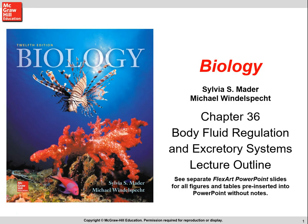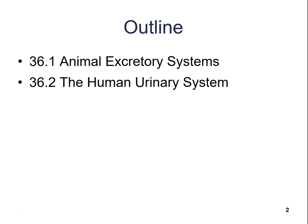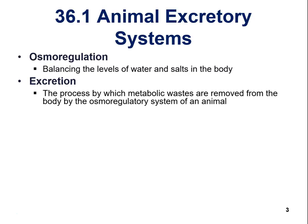This is our lecture on excretory systems — body fluid regulation and excretory systems in humans. We're going to call it the human urinary system, chapter 36. Just like all these chapters, we'll talk about animal excretory systems and differences between different species or groups, and then the human urinary system. Make sure you have your review sheet and are taking notes as you go along.